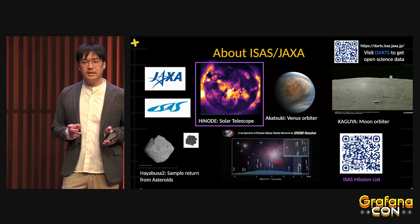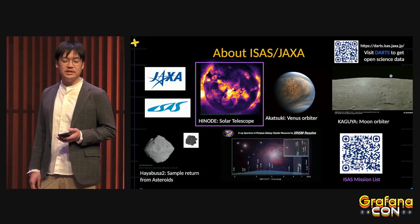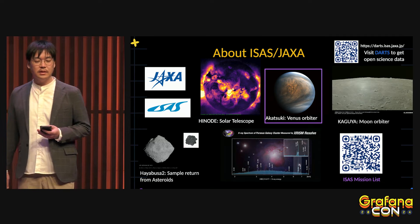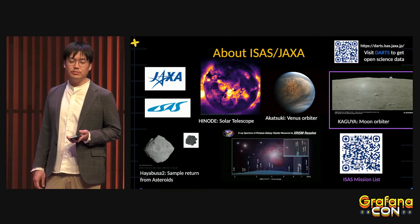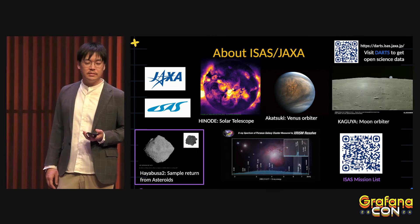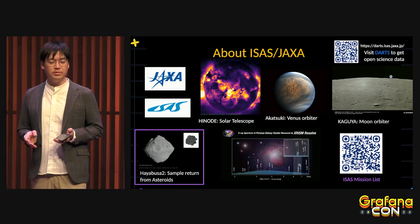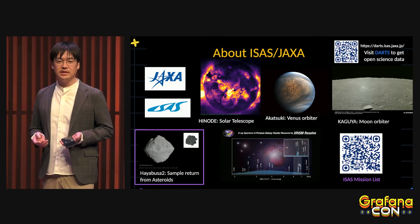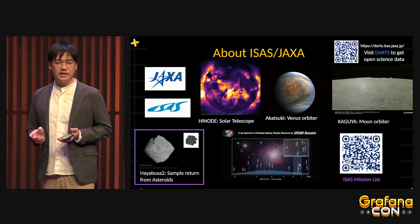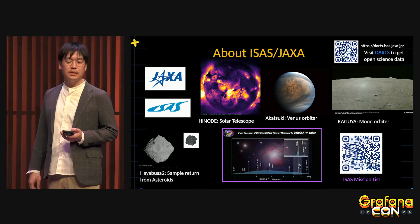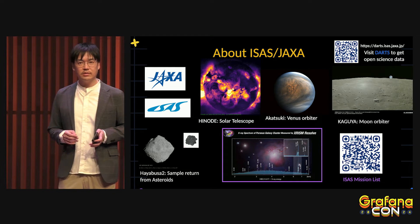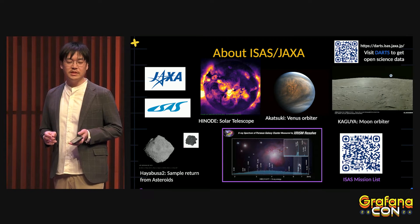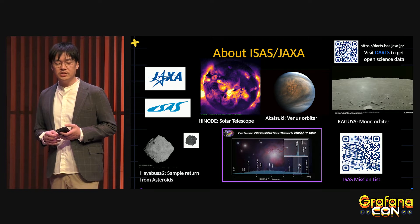Let's take a look at some of them. This is a solar image from the Hinode Solar Telescope, and this is an Akatsuki Venus Orbiter image. This movie is from the Kaguya Moon Orbiter, and this is the asteroid Ryugu as seen by the Hayabusa2 probe. The smaller image shows a microscopic view of samples that Hayabusa2 brought back to us. This energy spectrum was taken by XRISM, launched with the same vehicle as SLIM.